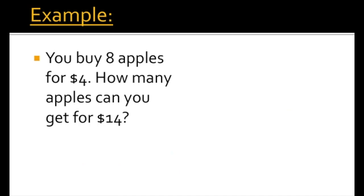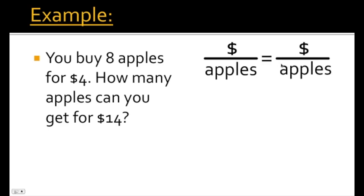Let's take a look at this example. You buy 8 apples for $4. How many apples can you get for $14? We know we paid $4 for 8 apples, and we're talking about dollars per apple. Since the left side of the proportion is dollars per apples, the right side is going to be set up the same exact way — also dollars per apples. We know we bought 8 apples and paid $4, so that's our first ratio: $4 over 8 apples, with dollars on top and apples on the bottom.